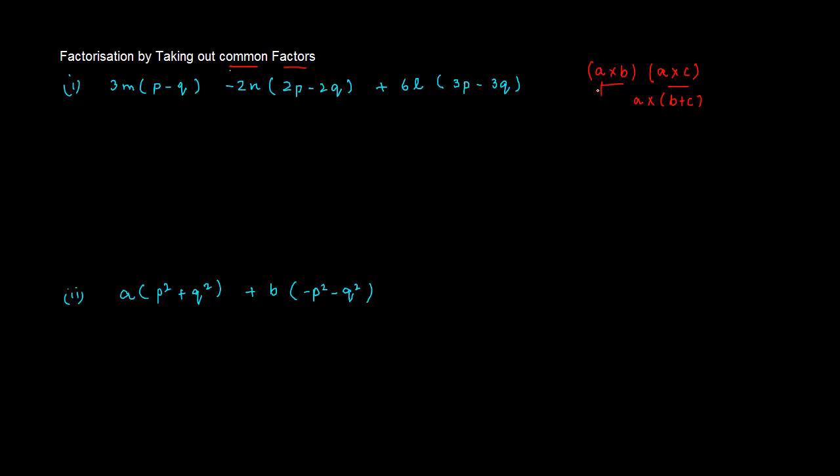In these two, we have A as a common factor. And therefore, we can just take out A and then multiply it by sum of these two.